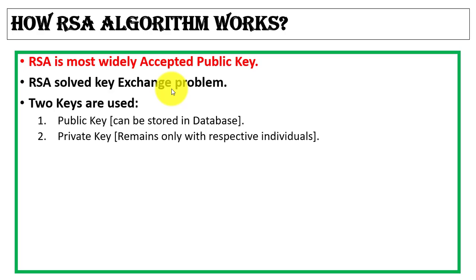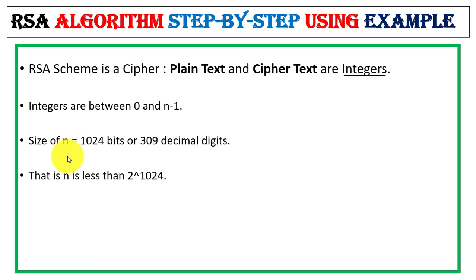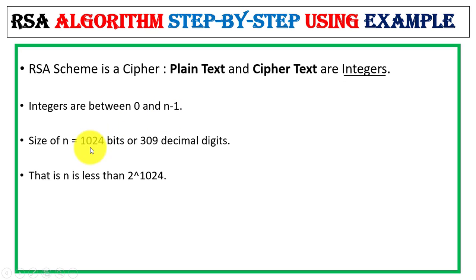In RSA we use two keys for encryption and decryption: the public key and the private key. The public key is used for encryption and the private key is used for decryption. The public key is shared with everyone and the private key is kept secret. RSA is a cipher scheme where plaintext and ciphertext are integers between 0 and n minus 1, and the size of n is 1024 bits.